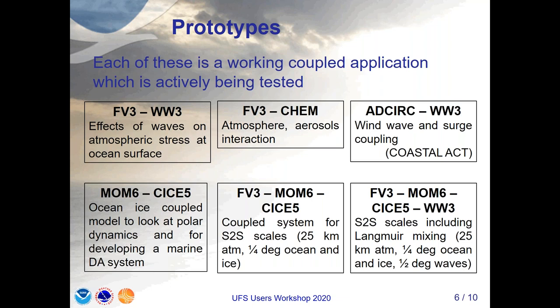Then there are prototypes — it's not just weather. These six prototypes have been shown over the last year or so. They include things that are completely non-weather like the ETSERC WaveWatch coupling for the Coastal Act, but also are the prototypes for the seasonal and sub-seasonal ones. These prototypes may not be fully supported yet and it may take a while before we get there, but they are in the different repositories and code bases. Particularly the FV3, MOM6, CICE-5 coupling with or without WaveWatch is our prototype for our sub-seasonal and seasonal systems. And it's already massively outperforming the ice in the present CFS.